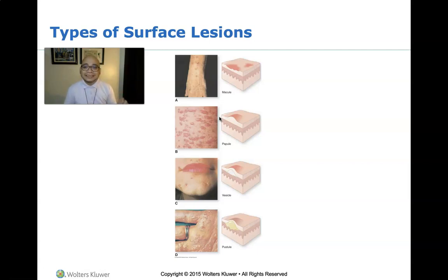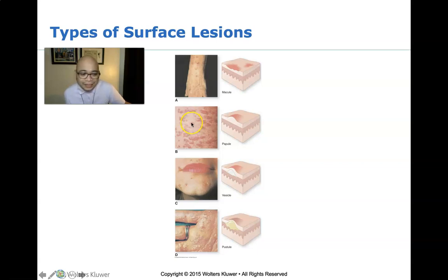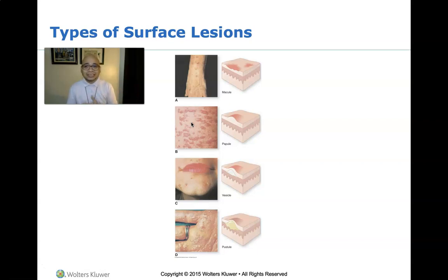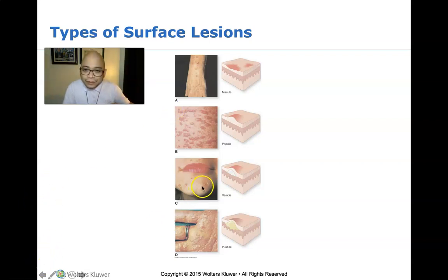A papule can have distinct or indistinct borders. It can appear in a variety of shapes, colors, and sizes. It is not a diagnosis or a disease in itself. Papules are often called skin lesions — these lesions are essentially changes in your skin's color or texture.